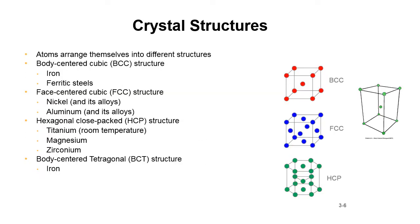Okay, we're going to get into this crystal structure thing. Atoms arrange themselves into different structures. Here you have BCC, FCC, hexagonal close pack, and body centered tetragonal. You're going to hear these terms from here on out. You're going to run across these all the time, so you might as well just bite the bullet and learn these guys.